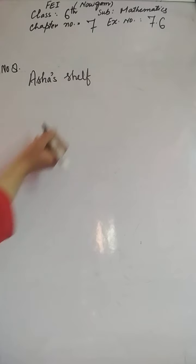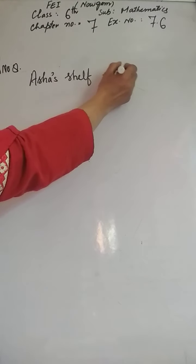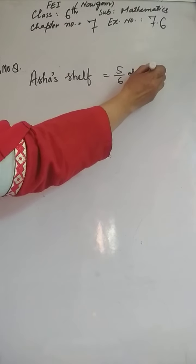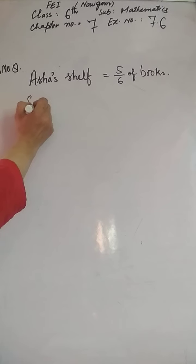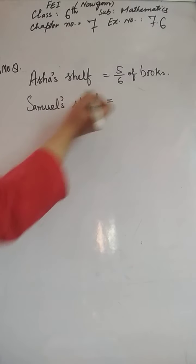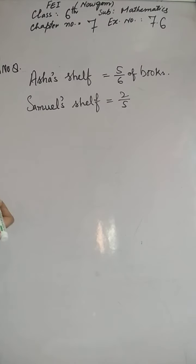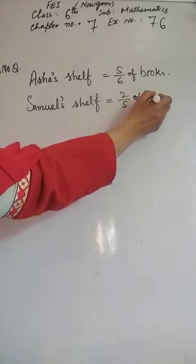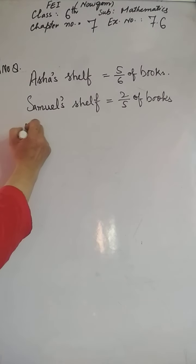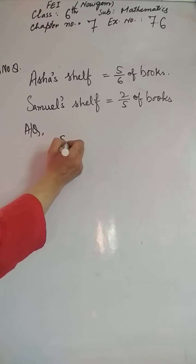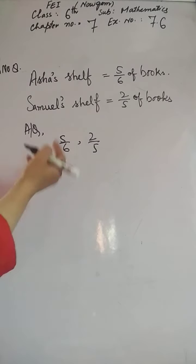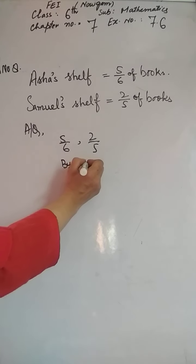Aisha's shelf is equal to 5/6 of books. Samoon's shelf is equal to 2/5 of books. Ab hamein batana hai kiska shelf zyada bhara hua hai. According to the question, 5/6 aur 2/5 — yahan par hum cross multiplication karenge. Dekhenge kisko zyada books bhari hain by cross multiplication.